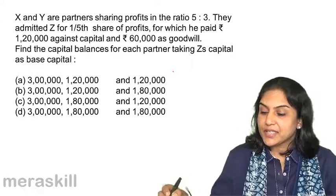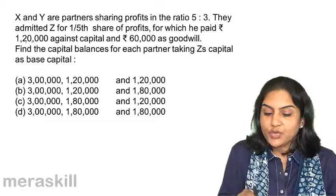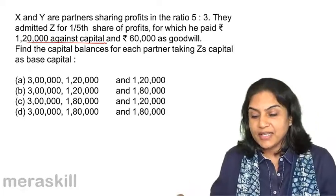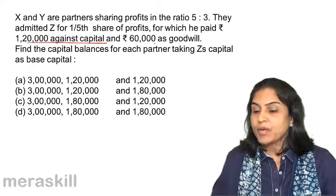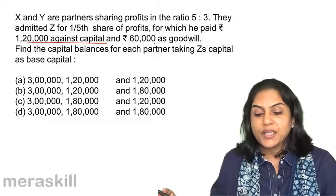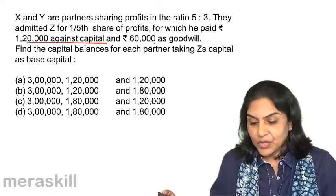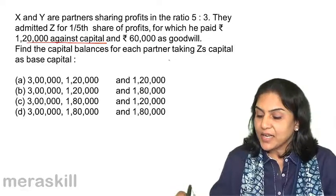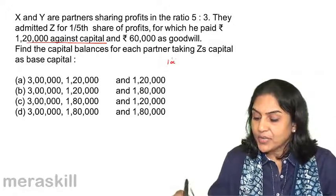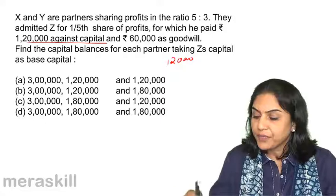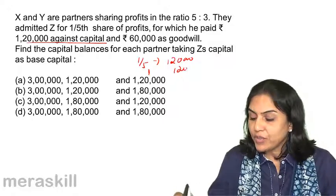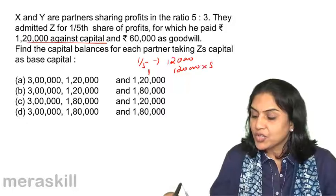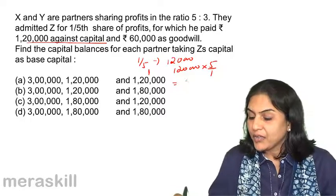What is Z's capital? Z's capital is $1,20,000 — what he paid against his capital. What he paid as goodwill premium will be transferred to the other partners' capital accounts. So, if $1,20,000 is taken as the base, $1,20,000 is for one-fifth share. Therefore, 1 equals $1,20,000 into 5/1, giving us a total of $6,00,000.